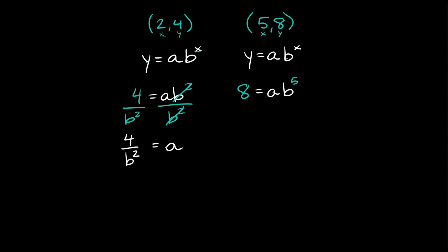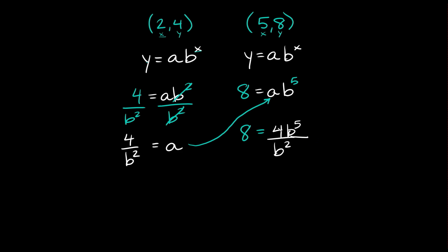Now that we've solved for a — we know it equals 4 over b squared — we can take that and plug it into the other equation. So we're going to say 8 is equal to a, but a is 4 over b squared, and then we're multiplying by b to the fifth. So we can put that in the numerator, giving us 8 is equal to 4b to the fifth over b squared.